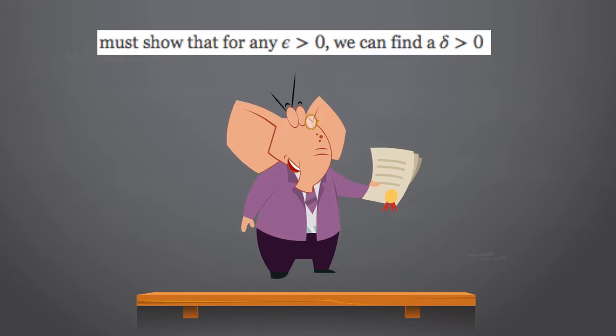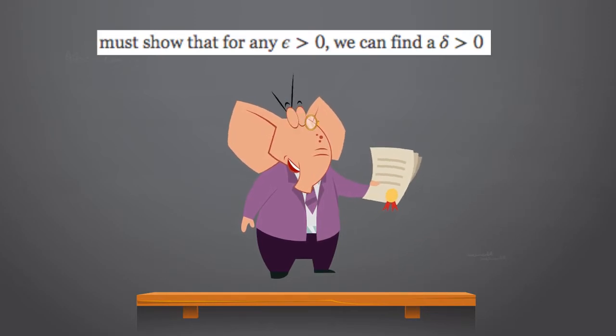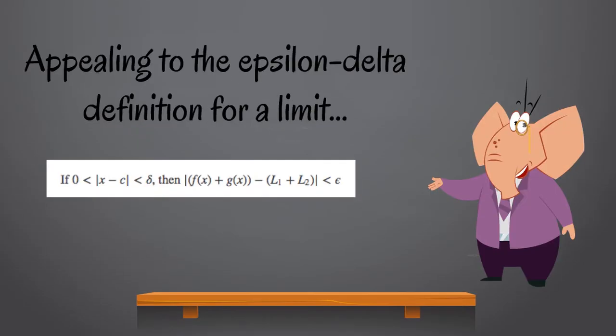Appealing to the epsilon delta definition for a limit, we must show that for any epsilon greater than 0, we can find a delta greater than 0, such that if 0 < |x - c| < delta, then |f(x) + g(x) - (L1 + L2)| < epsilon.